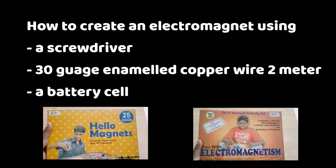How to create an electromagnet using a screwdriver, 30 gauge enameled copper wire 2 meters, and a battery cell.